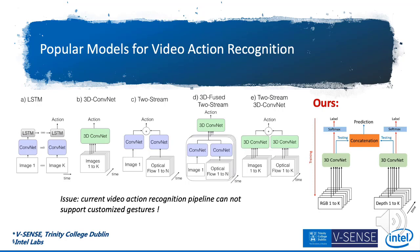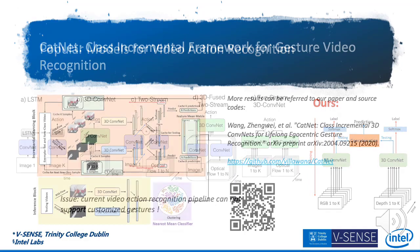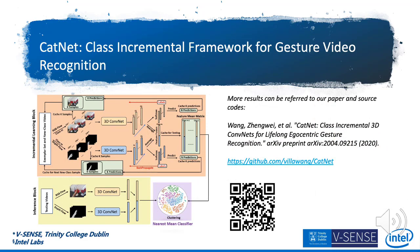The current issue with such a pipeline is it doesn't support users to customize their own gestures. So, the motivation of our work is to incorporate a lifelong learning framework into the current model to make it learn new gestures continuously. This is our basic architecture. We incorporate an incremental learning strategy into current two-stream models so such a model can learn new gestures incrementally. More results can be referred to in our paper and source code.